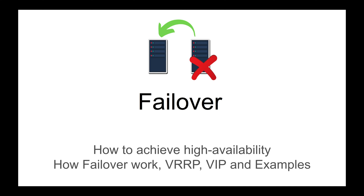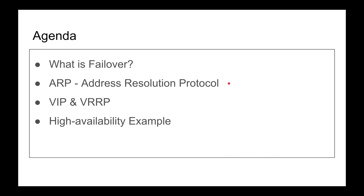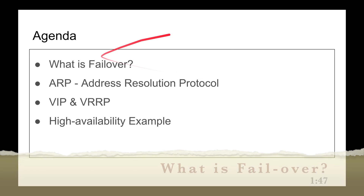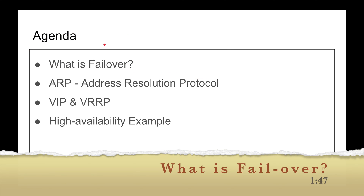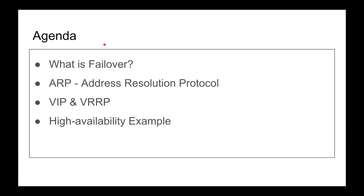Failover is a technique of switching to a redundant backup machine when a certain machine goes down. This is a very common implementation for achieving high availability, and it is often mixed with different load balancing techniques such as layer 4 and layer 7 load balancing. In this video I want to go through what failover is from a very high level perspective, and then go through some details that are necessary to understand how failover works.